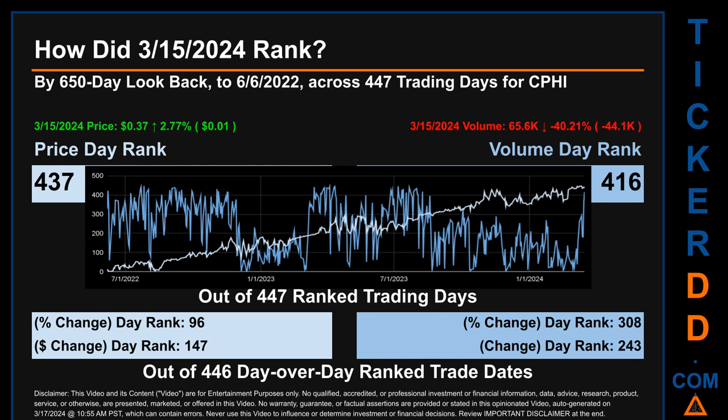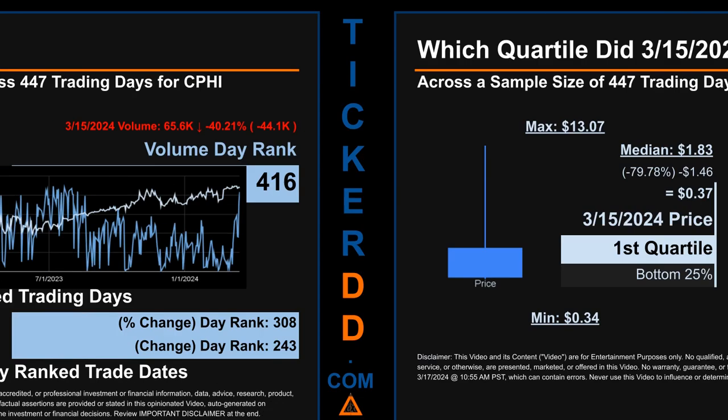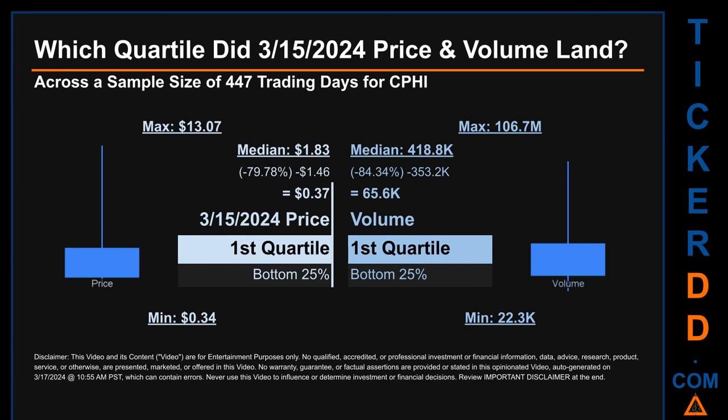Hello, my name is Maria. Which quartile did March 15, 2024 price and volume land in, across a sample size of 447 trading days? The maximum end-of-day price for CPHI was $13.07, while the minimum was 34 cents. Within that price range, March 15, 2024's price of 37 cents landed within the first quartile — meaning it was within the bottom 25% of all sampled end-of-day prices. The day's volume also landed within the first quartile, at the bottom 25% of all sampled daily volume, which saw a max daily volume of 106.7 million and a minimum of 22,300.